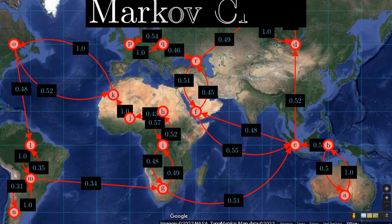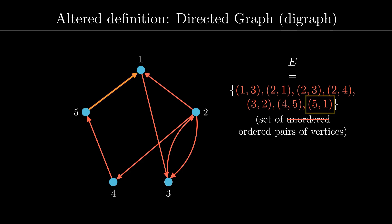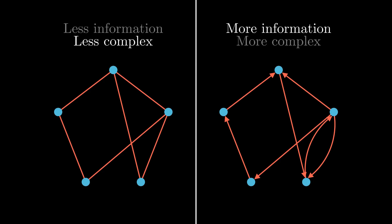This model is also called Markov chain. Compared to simple graph, of course directed graph can provide us more detailed information. But simple graphs are easier to study.